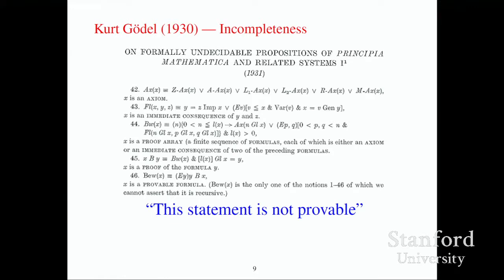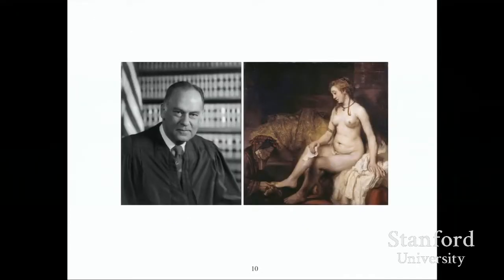As long as people thought the Entscheidungsproblem was solvable, you didn't really need any kind of formal definition of algorithm. It would be just like Justice Stewart's definition of pornography: "I know it when I see it." But if you want to prove there's no algorithm, then you really need some formal way of understanding what an algorithm is. So the race was on.